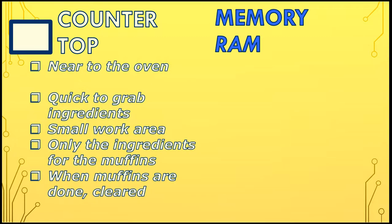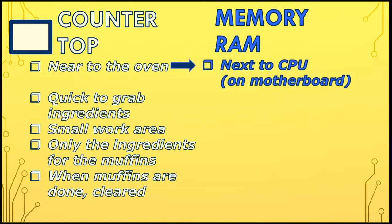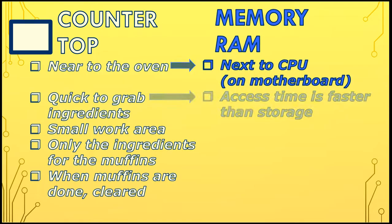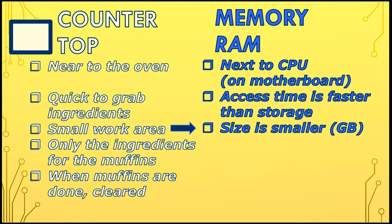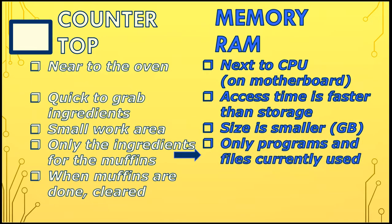Just like the countertop is next to your oven, memory and CPU are very close to each other on the motherboard, which helps make the access times faster than storage. However, our countertops are quite small, and memory is also small — measured in a small amount of gigabytes. Only the programs and files that you are currently using are kept in memory.